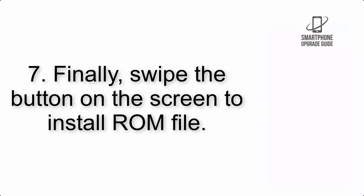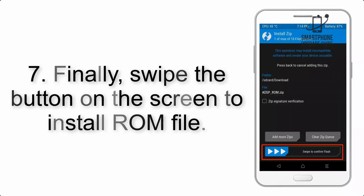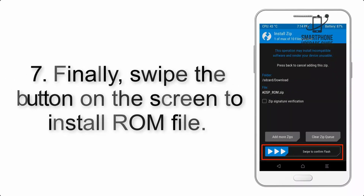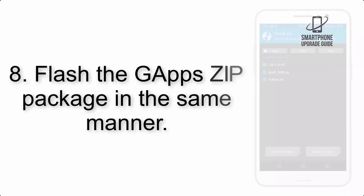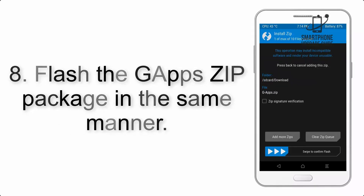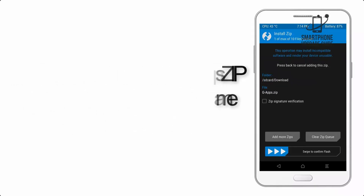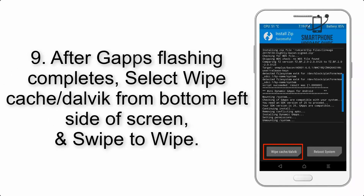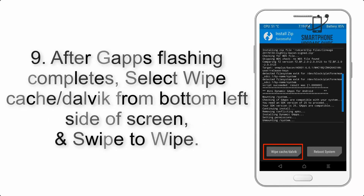Step 7: Swipe the button on the screen to install the ROM file. Step 8: Flash the GApps zip package in the same manner. Step 9: After GApps flashing completes, select Wipe Cache and Dalvik from the bottom left side of the screen and swipe to wipe.